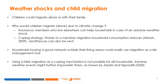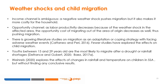Using child migration as a coping mechanism is not possible for all households. Migration has a cost not easily affordable for poor households, and the adverse weather event might further impoverish them, as shown by Azari and Signorelli, 2020. The income channel has contrasting effects: by decreasing income, a negative weather shock can induce migration, but the decrease in income also makes migration less likely because costs cannot be afforded. The opportunity channel is unambiguous — as labor productivity decreases due to the weather shock in the affected area, the opportunity cost of migrating decreases as well, pushing migration.